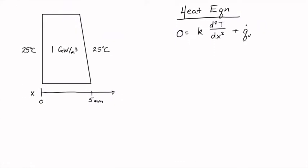Here's the geometry of our solar cell. It's 5 millimeters thick, and either side of the panel is isothermal at 25 degrees C. Inside the entire bulk of the solar cell, heat is being generated due to the photoelectric effect at 1 gigawatt per meter cubed.